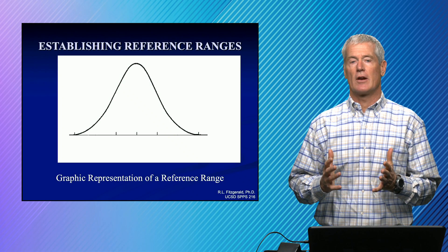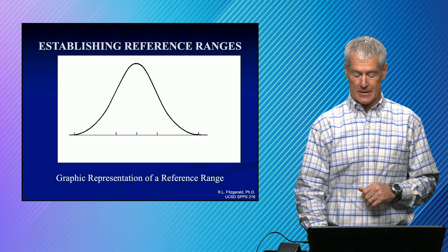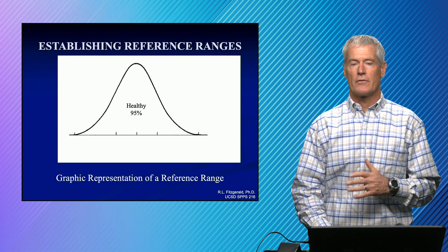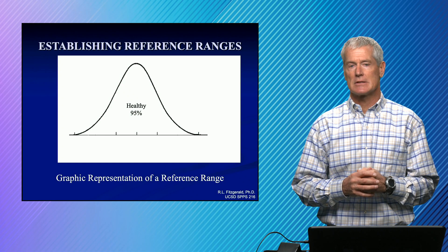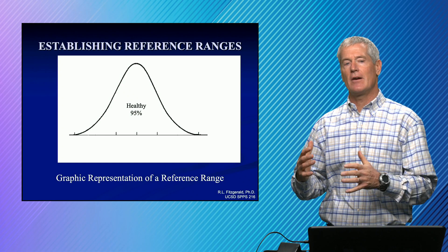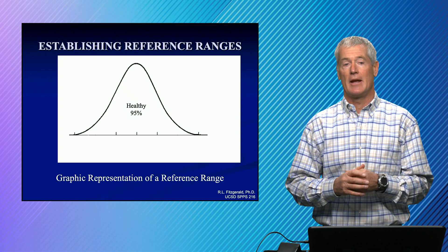And basically you take the mean plus or minus two standard deviations. Plus or minus two standard deviations of a Gaussian distribution is the inner 95%. And so that works fine if it's Gaussian. If it's non-Gaussian, you need about 120 subjects. And you can see how that could become very complicated if you have reference ranges that are age dependent or sex dependent or both.